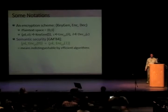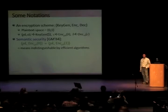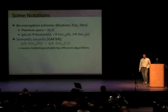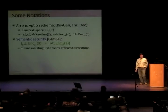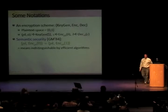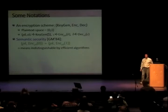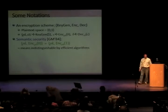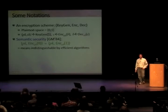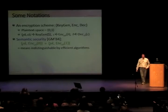Before we start, let's set up some notation. We're talking about an encryption scheme with three components: key generation, encryption, and decryption. Throughout this tutorial, the plaintext space is always going to be zero and one — we're always encrypting individual bits. Each ciphertext contains a single plaintext bit. Key generation gives us a public and a secret key. Encryption takes the public key and a bit and gives a ciphertext. Decryption takes the ciphertext and secret key and recovers the bit.